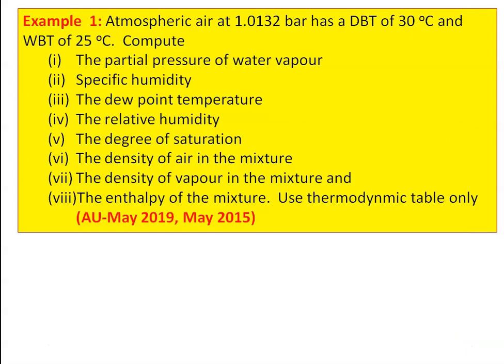We take all the problems from the university question papers, specifically from May 2019 and May 2015. Example number one: atmospheric air at a pressure of 1.0132 bar has a dry bulb temperature of 30°C and a wet bulb temperature of 25°C.